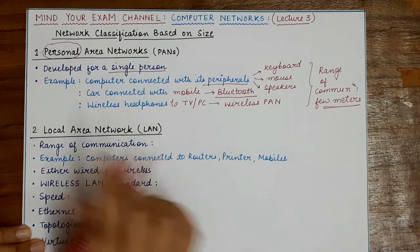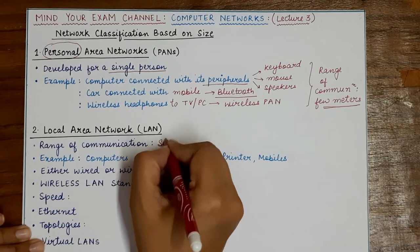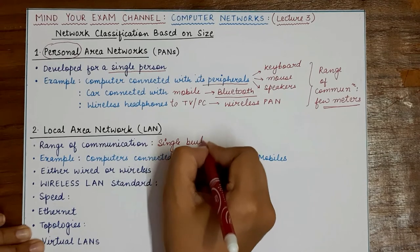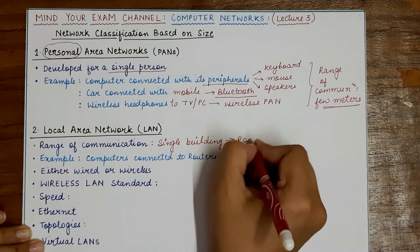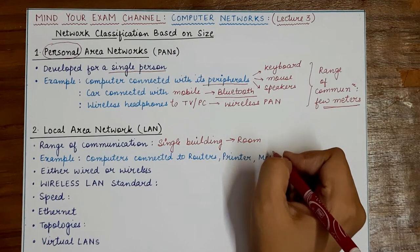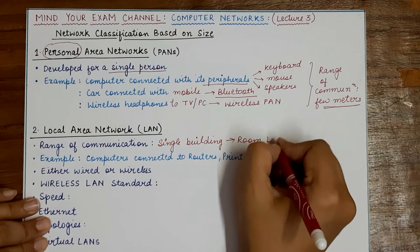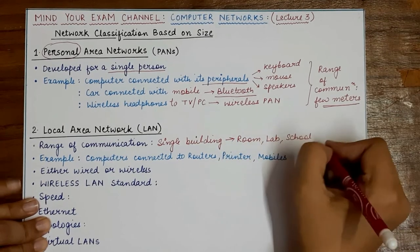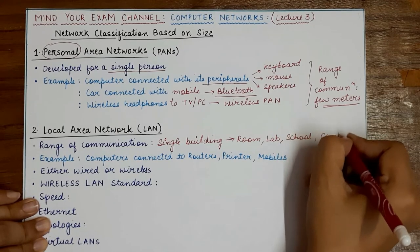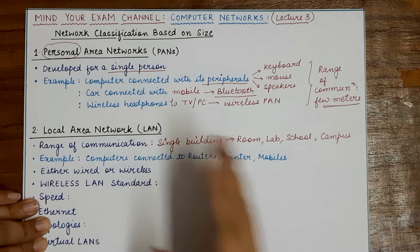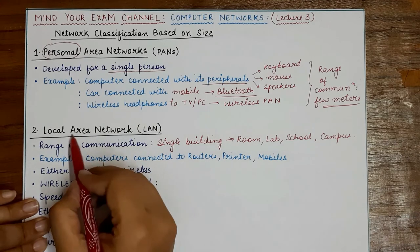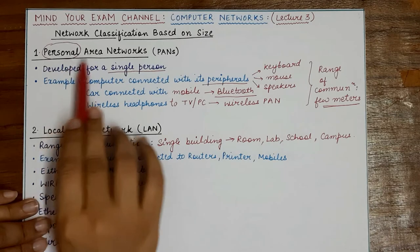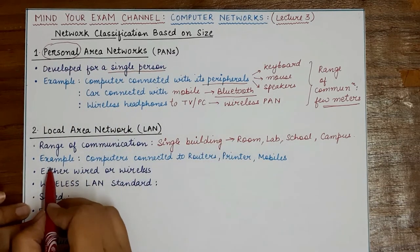Now coming to Local Area Networks, or LANs. LANs are the most widely used kind of networks today because the range of communication for a LAN covers a single building. This single building can be your own room, a lab, a school, or a campus expanding a few hundred meters. The range of communication for a LAN generally varies from about 10 meters to 500 meters or even one kilometer.